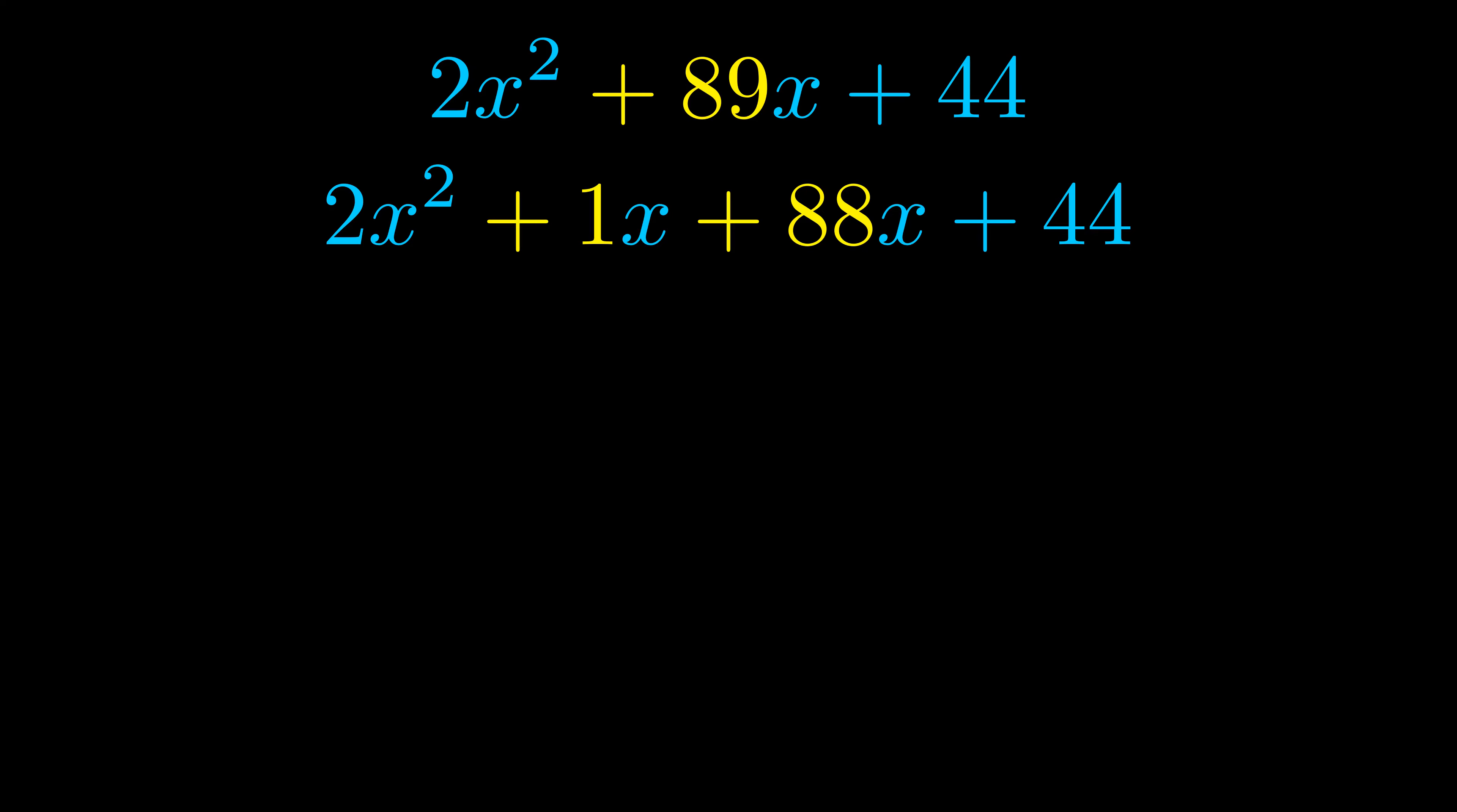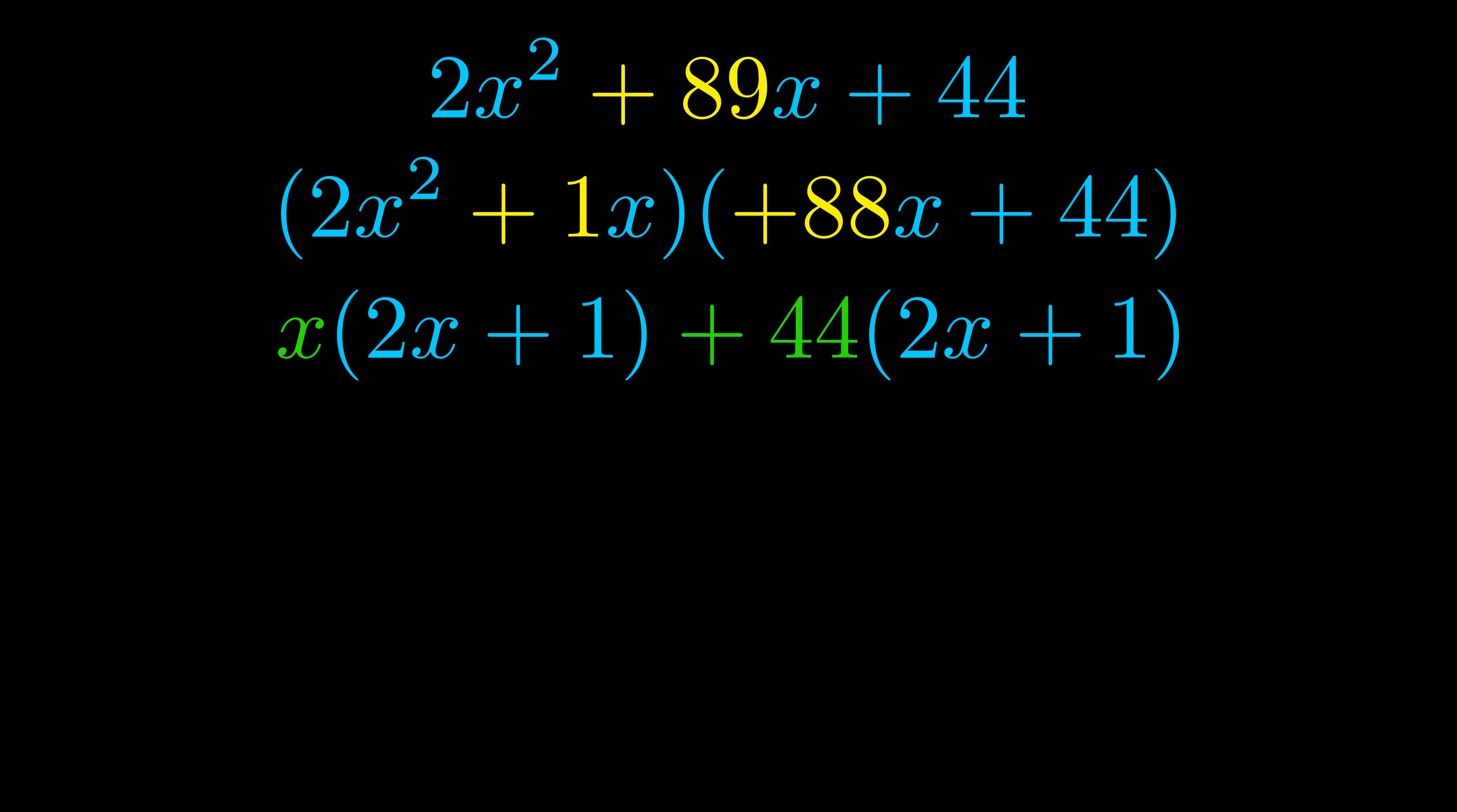Once we've done this, we put parentheses around the first term and the last term. We do that so we can take the greatest common factor out of both terms. We can see the greatest common factor is now outside in green.